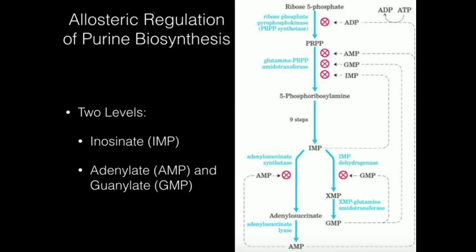Once we get to IMP, which is the branch point towards either AMP or GMP, there are two more levels of regulation. As we would expect, they're at the start — the first enzyme in each of the branches. That first enzyme to go to AMP synthesis is adenylosuccinate synthetase, and to go towards GMP it's going to be IMP dehydrogenase.